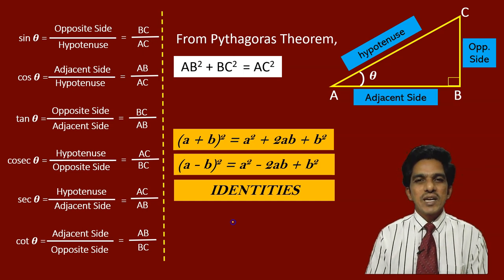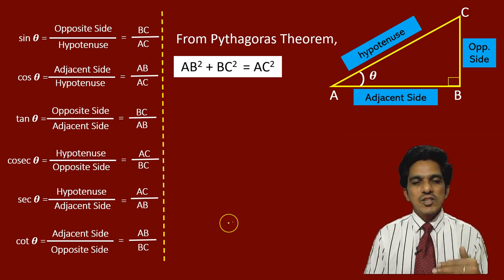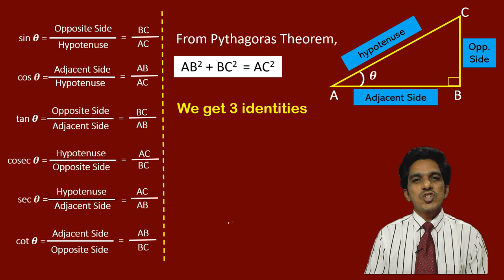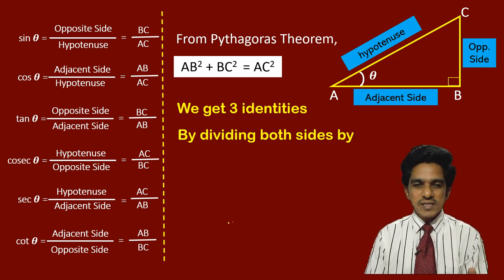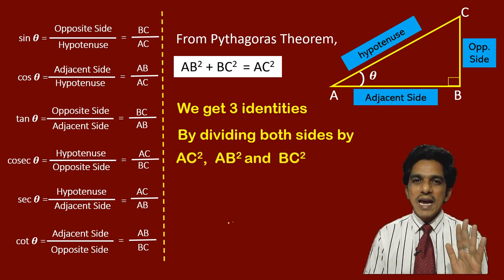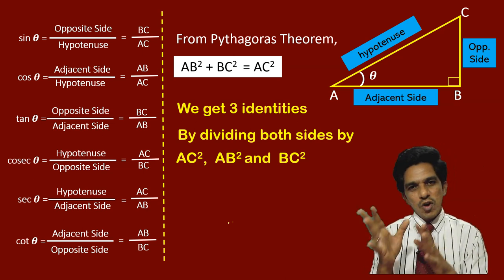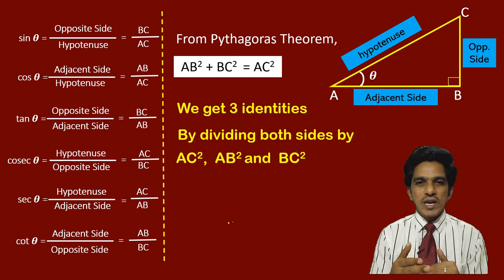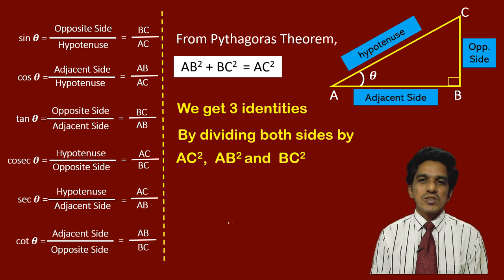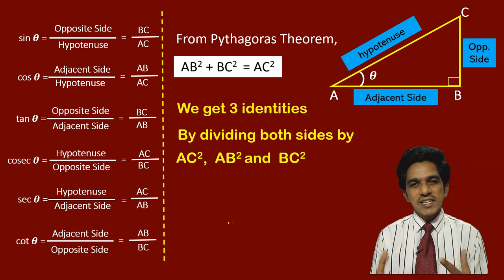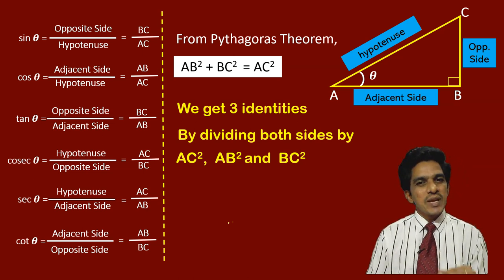Trigonometry has many identities. In this class, we will discuss three such identities by dividing the Pythagorean equation AB² + BC² = AC² by three values: AC², AB², and BC². We have squares of all three sides, so dividing by each will give us a different trigonometric identity.